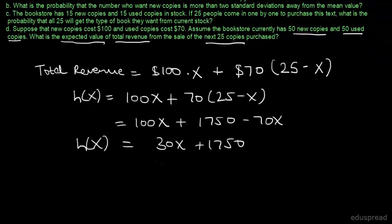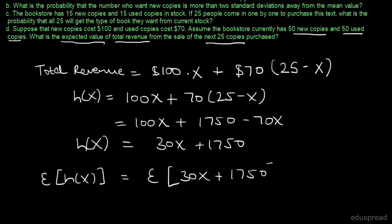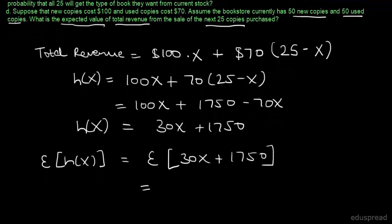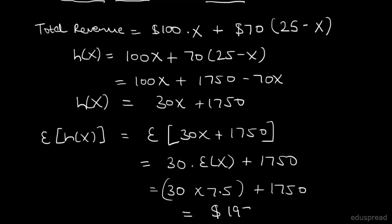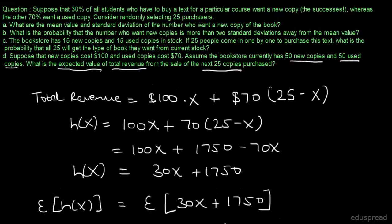We need the expected value of h(x) equals E(30x + 1750) equals 30 times E(x) plus 1750. We already know E(x) equals 7.5, so this is 30 times 7.5 plus 1750, which equals $1975. And that completes part D.